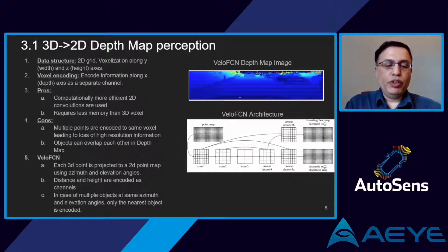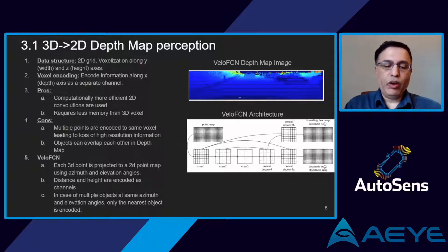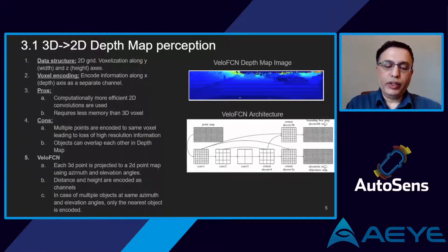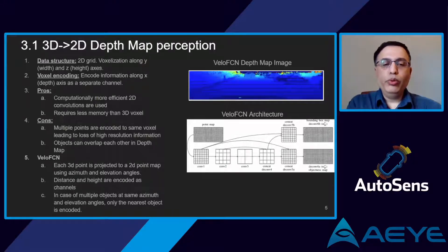Now we start with a deep dive of perception algorithms for 3D point clouds. Our first technique is the 2D depth map, which uses Euclidean space. A 2D depth map preserves the width and height dimensions of the point cloud and compresses the depth dimension into a single value for each pixel. It voxelizes the point cloud along the Y and Z axes and imports X axis information as a channel. We can directly apply 2D convolution filters due to its spatially ordered structure, and 2D convolutions are computationally less demanding than 3D convolutions. However, when multiple points get encoded to a single 2D voxel, we lose high-resolution information, leading to accuracy degradation.